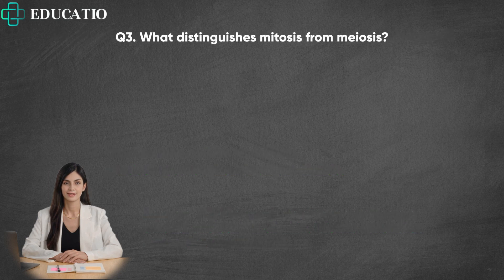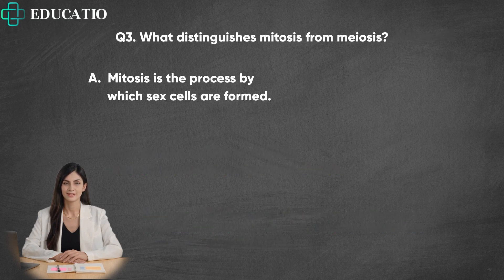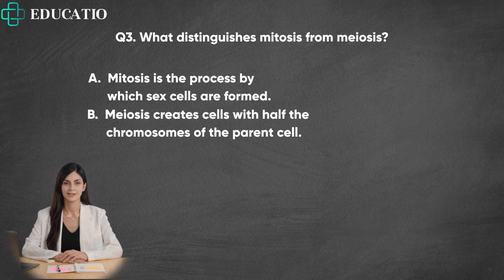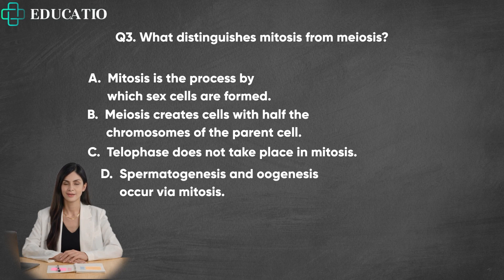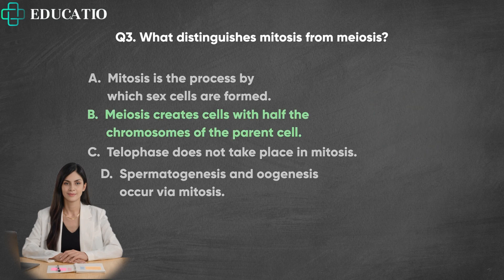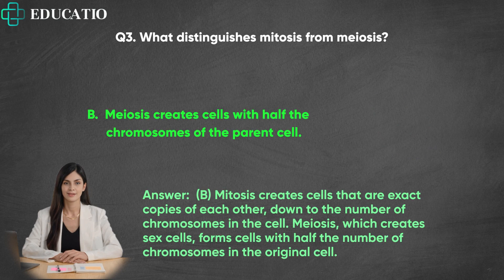Question 3. What distinguishes mitosis from meiosis? A. Mitosis is the process by which sex cells are formed. B. Meiosis creates cells with half the chromosomes of the parent cell. C. Telophase does not take place in mitosis. D. Spermatogenesis and eugenesis occur via mitosis. Answer: B. Mitosis creates cells that are exact copies of each other, down to the number of chromosomes in the cell. Meiosis, which creates sex cells, forms cells with half the number of chromosomes in the original cell.